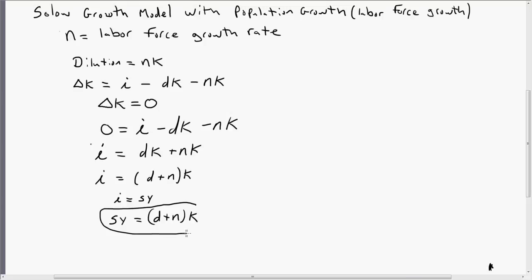So with this key result, we can start doing a problem. So let's say that the production function for an economy is given as follows. GDP per worker equals capital per worker raised to the one-third power.